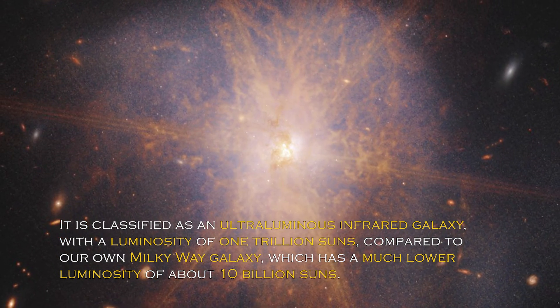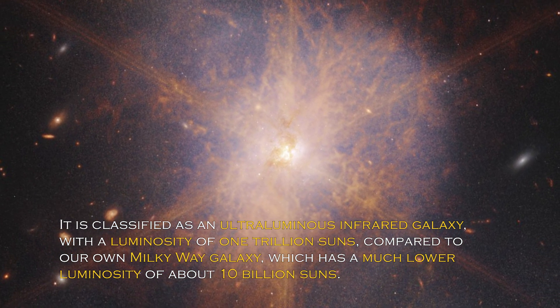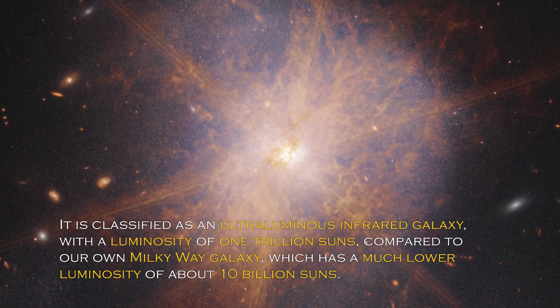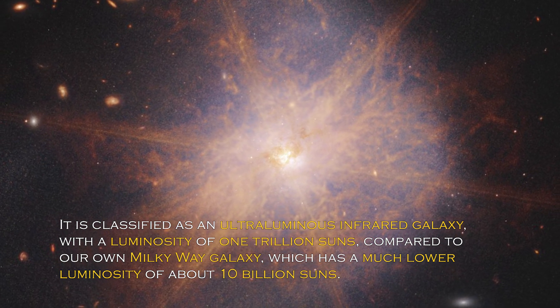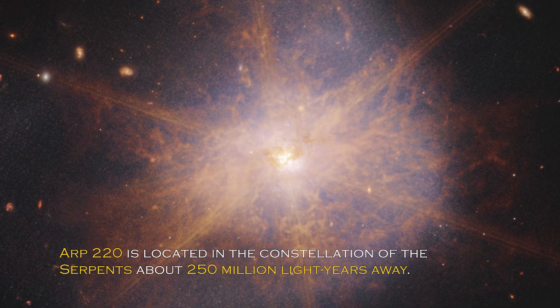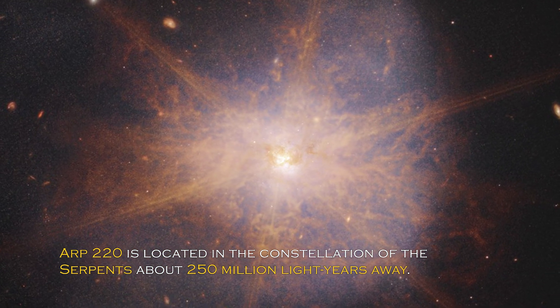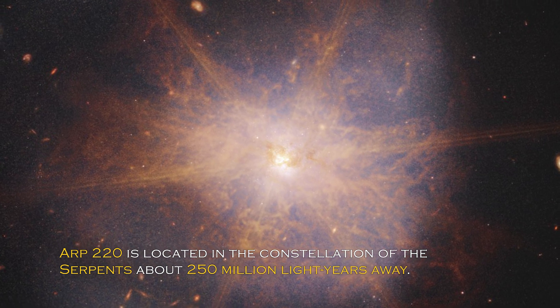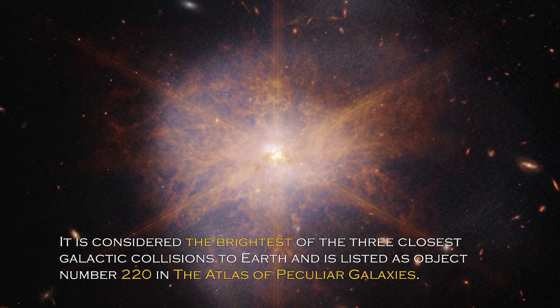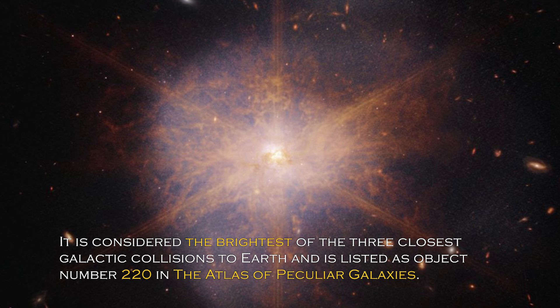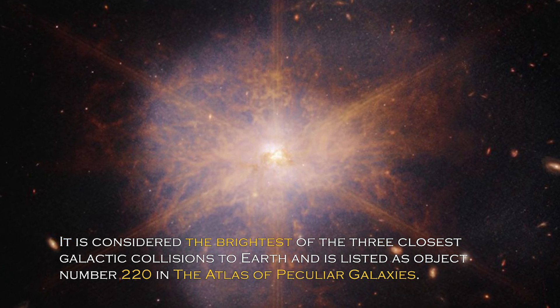It is classified as an ultra-luminous infrared galaxy with a luminosity of one trillion suns compared to our own galaxy, the Milky Way, which has much lower luminosity of about 10 billion suns. ARP 220 is located in the constellation of Serpens, about 250 million light-years away. It is considered the brightest of the three closest galactic collisions to Earth and is listed as object number 220 in the Atlas of Peculiar Galaxies.